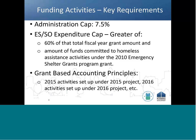Three key requirements to remember when funding activities are: first, do not fund the administration subfund activity in excess of the 7.5 percent cap; second, do not fund street outreach and emergency shelter activities in excess of the expenditure cap, which is the greater of 60 percent of that total fiscal year grant amount and the amount of funds committed to homeless assistance activities under the 2010 emergency shelter grants program grant; and third, set up one federal fiscal year's activities under the project for the same federal fiscal year — for example, only set up and fund 2015 activities under the 2015 project using 2015 grant funds.